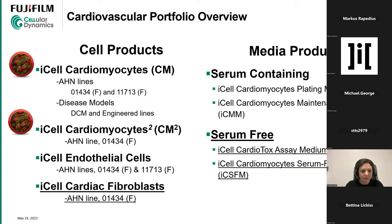In our portfolio we have iCell cardiomyocytes, mainly in apparently healthy normal lines with two donors. We also have disease models including a DCM line with an isogenic control. We have engineered disease model lines: Brugada syndrome and arrhythmogenic right ventricular cardiomyopathy. We also have the Cardiomyocyte Squared, which is where most of Bettina's data came from, plus endothelial cells and our recently developed iCell cardiac fibroblasts — which I'll mainly focus on.